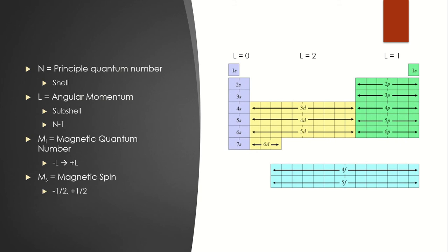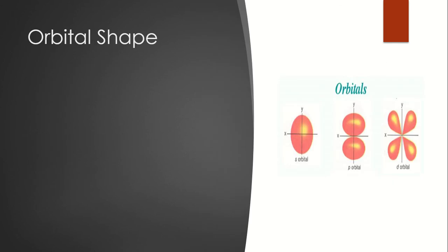And lastly, we have the magnetic spin, which can either be negative one-half or positive one-half. Now, as I said earlier, the angular momentum quantum number has different values, and depending upon those, it'll have a different shape as well.